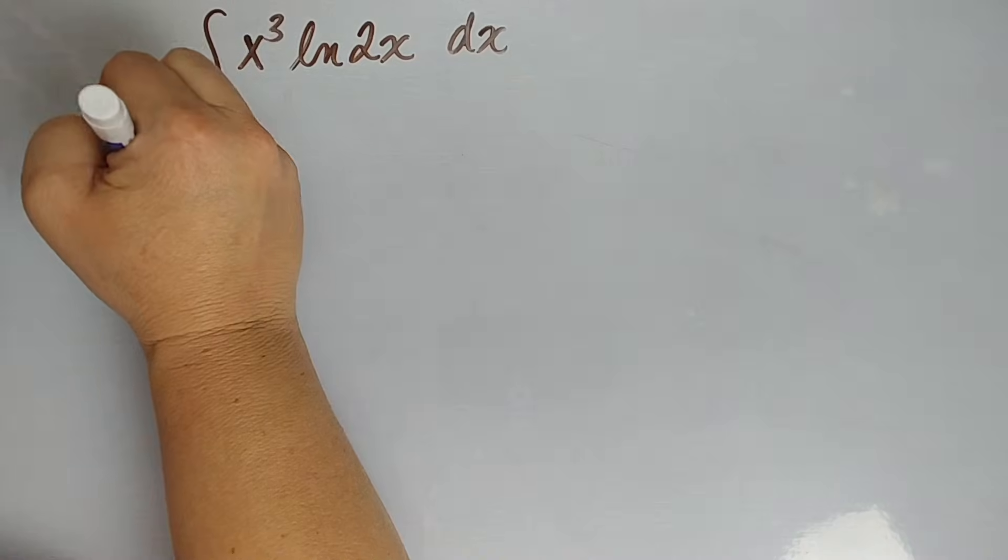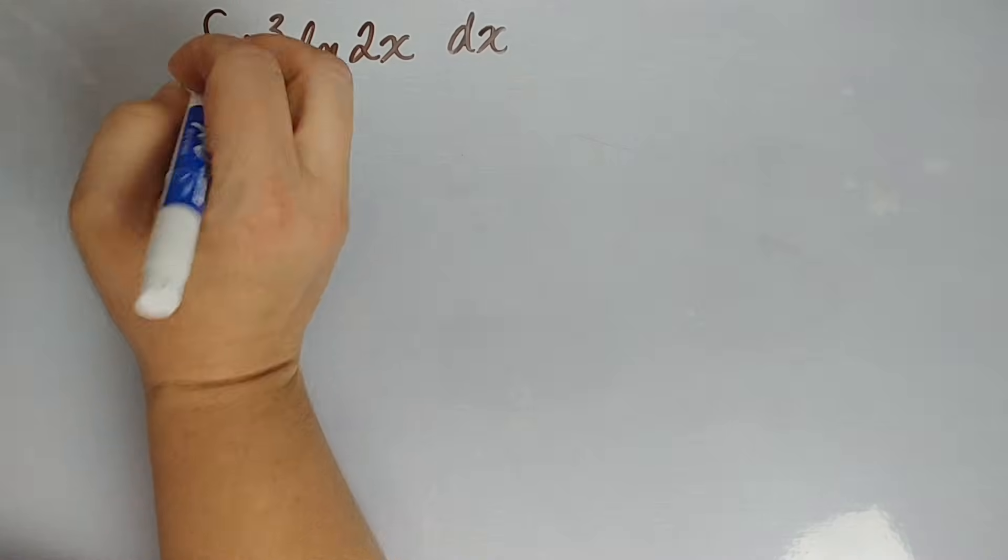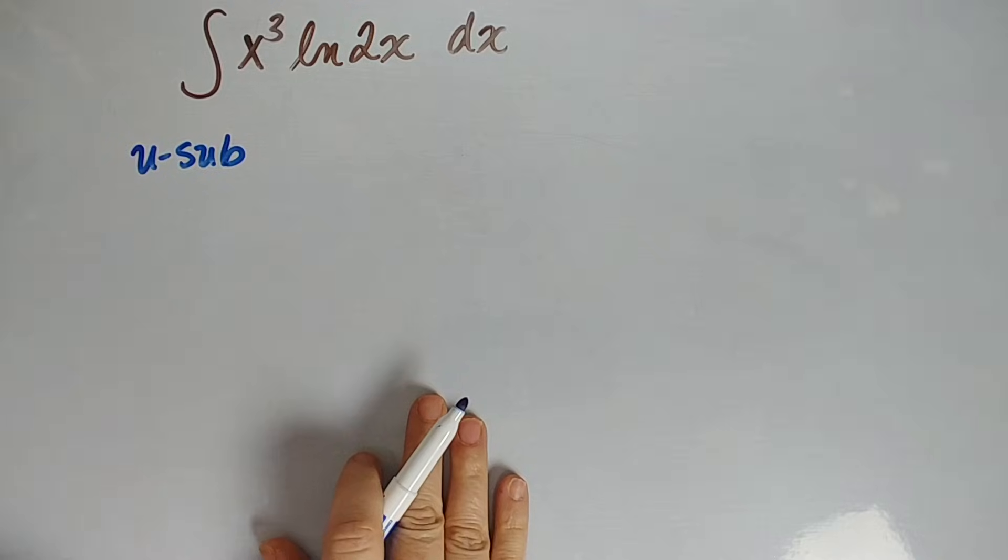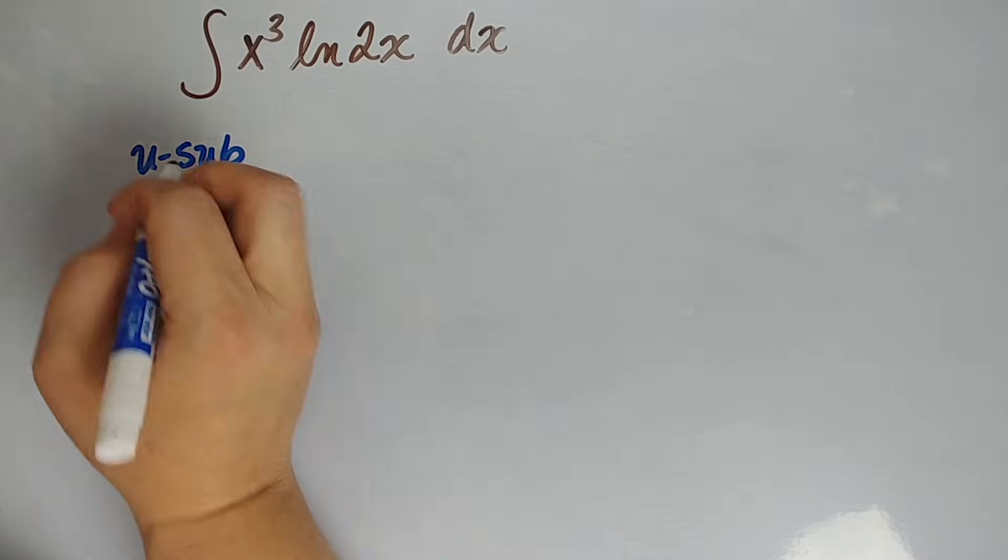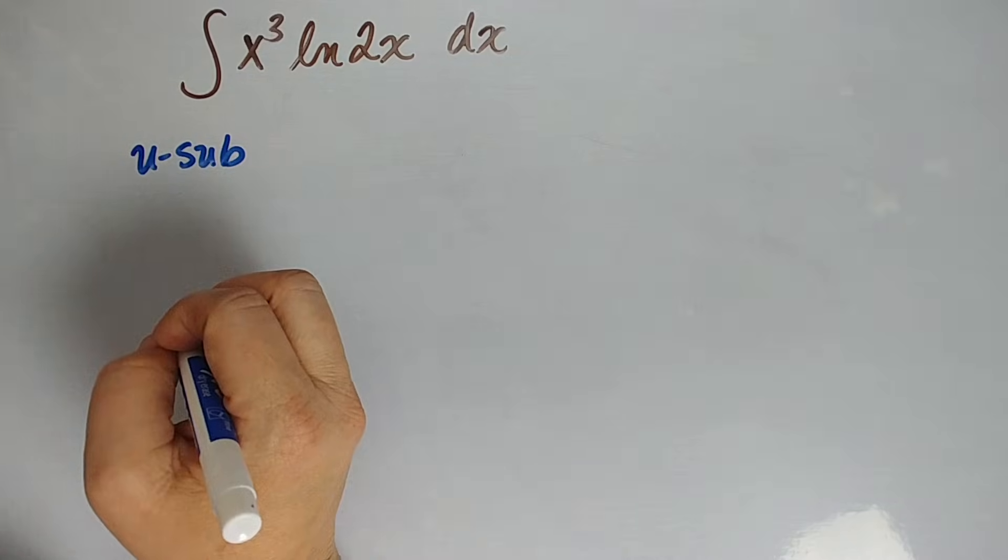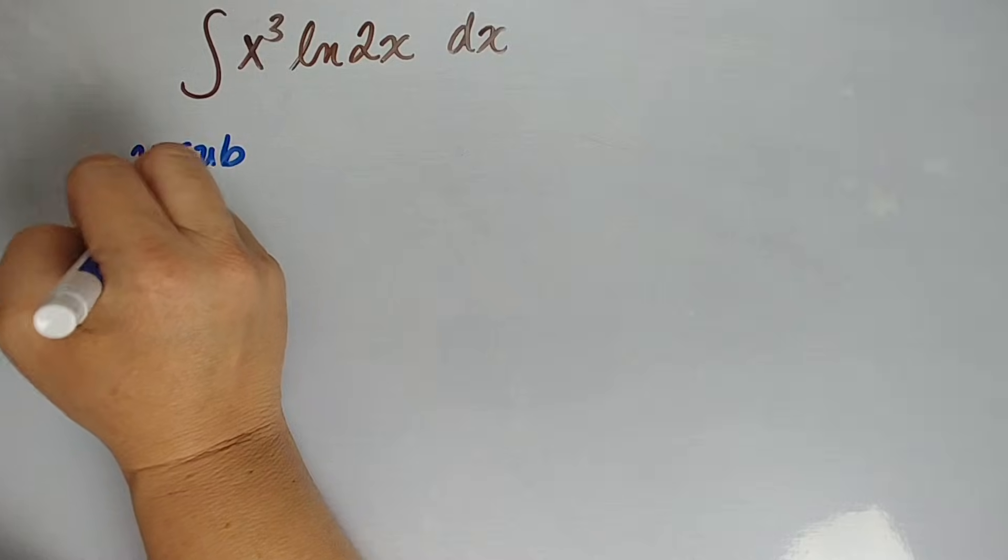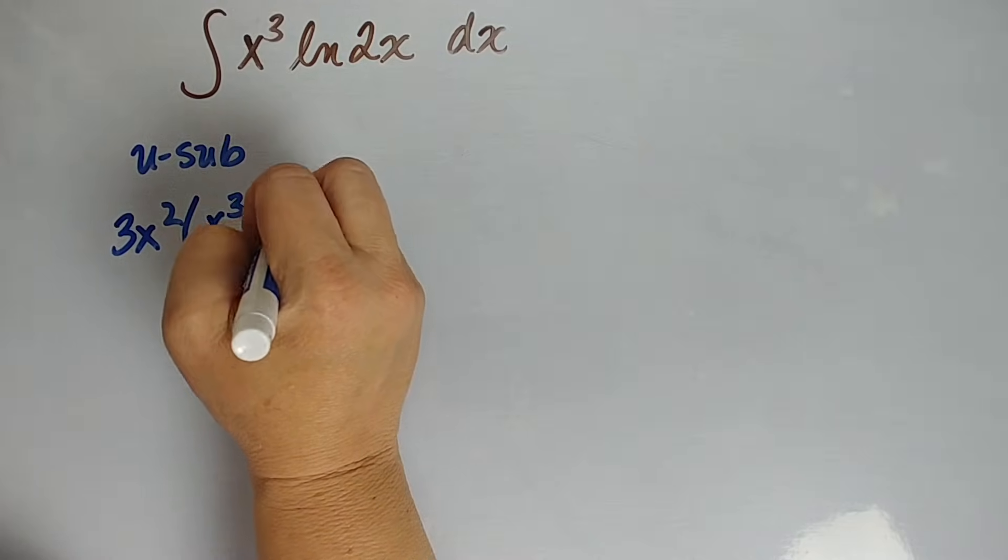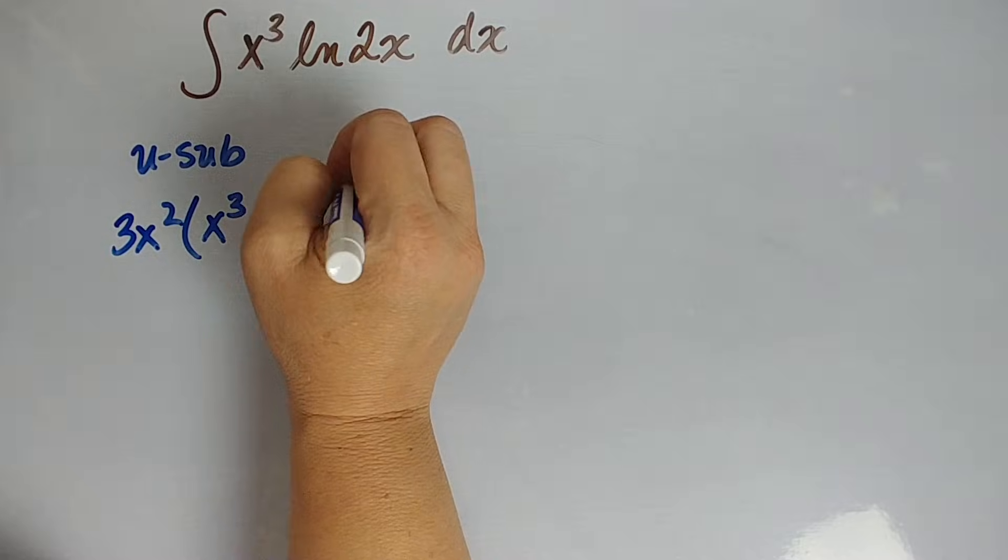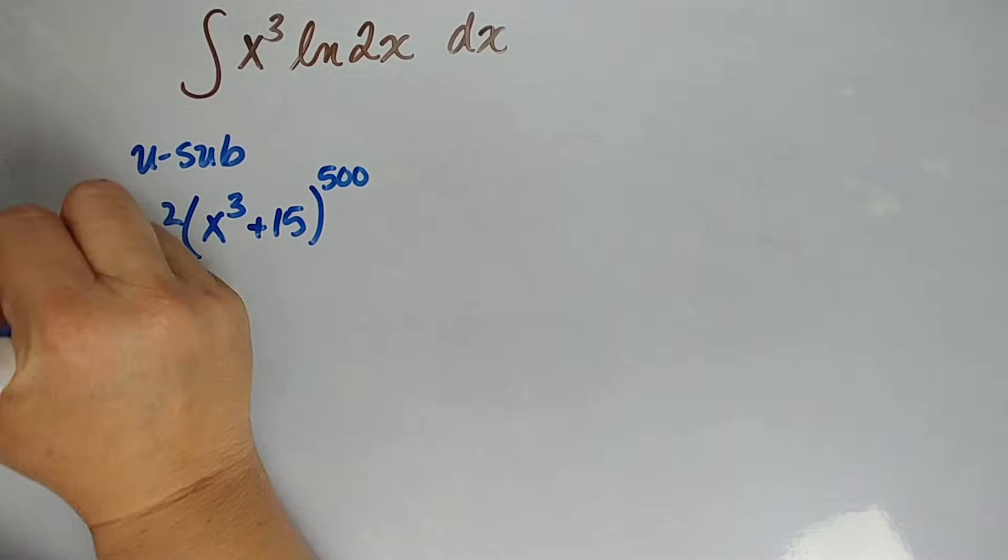When we want to use u-substitution, there's going to be two parts. There's generally, a lot of times, something raised to a power. So think about something like 3x squared and then x cubed plus 15 to the 500th power. Something like that.